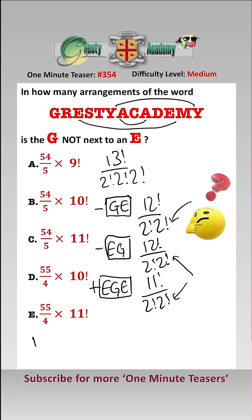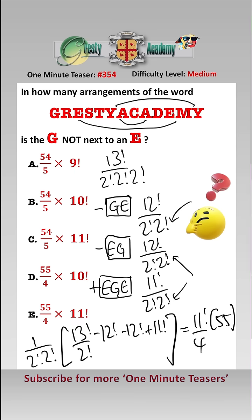Therefore the total number is 1 over 2 factorial, 2 factorial, just adding it all together: 13 factorial, take away 12 factorial, take away 12 factorial, add 11 factorial. And that simplifies to 11 factorial over 4 times 55, which is answer E.